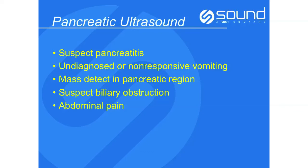If you suspect a biliary obstruction, especially in cats, the major duodenal papilla houses both the bile duct from the gallbladder and allows the pancreatic duct to drain into the duodenum. So in cats, an obstruction of the pancreatic duct can cause secondary cholestasis, and vice versa — extrahepatic cholestasis can cause secondary pancreatitis. Ultrasound is also very useful for evaluating undiagnosed abdominal pain to determine if pancreatitis is present.